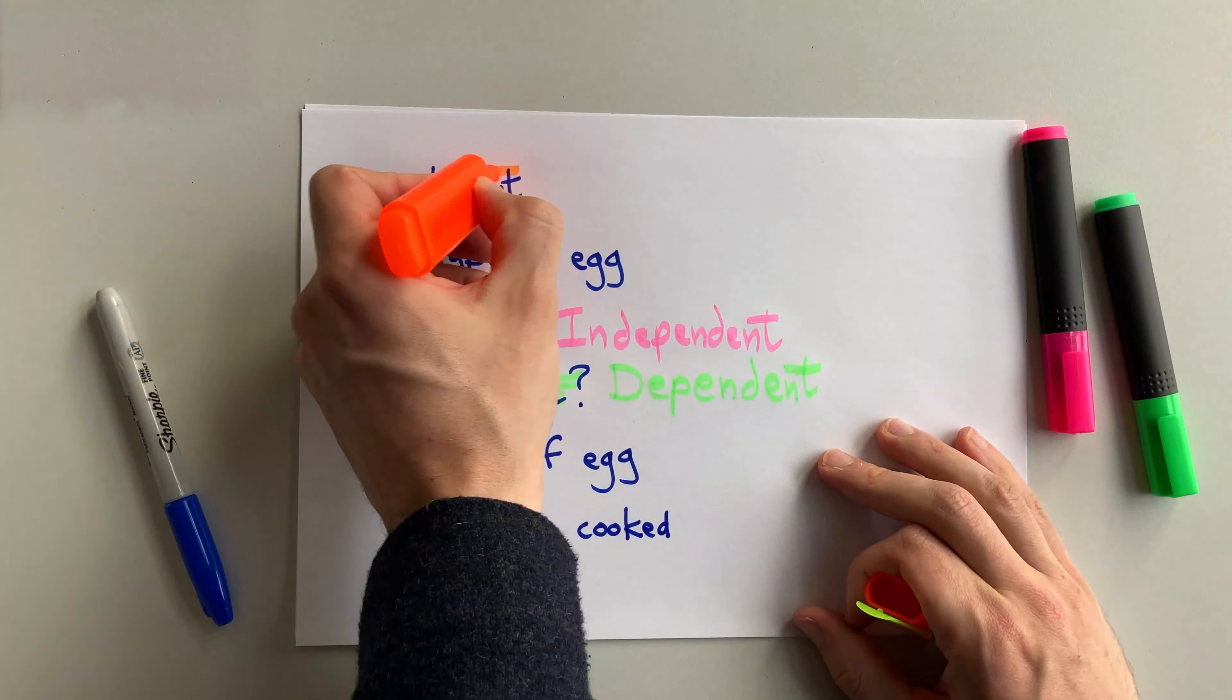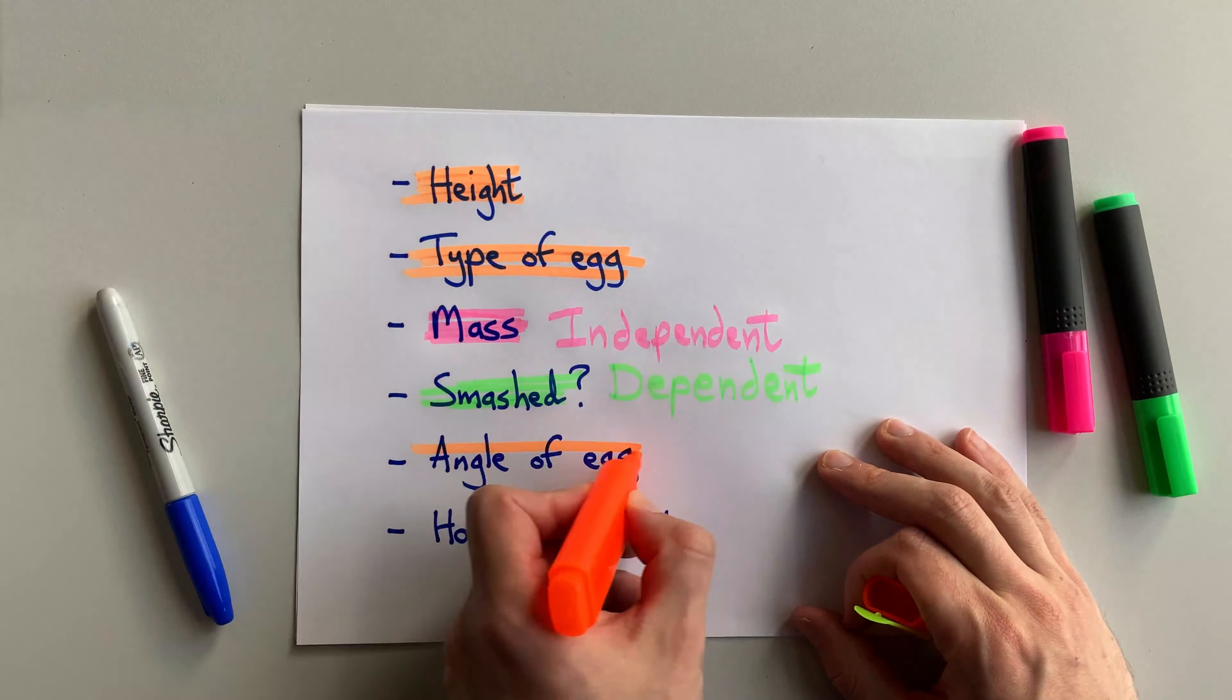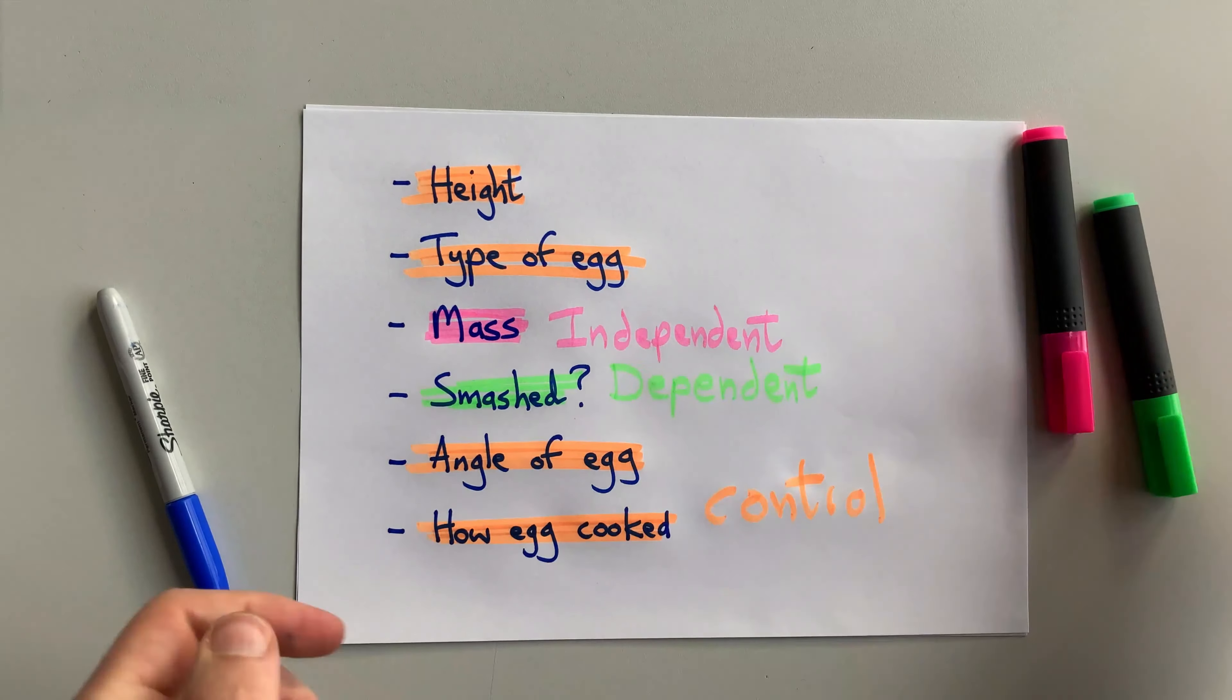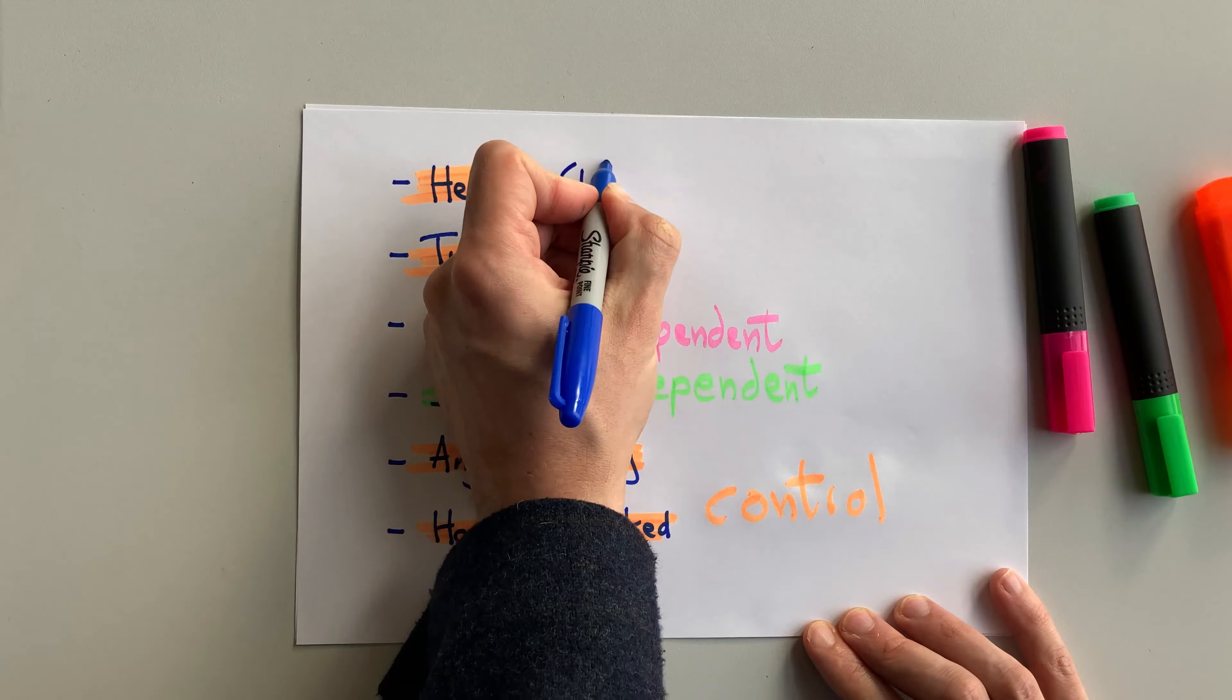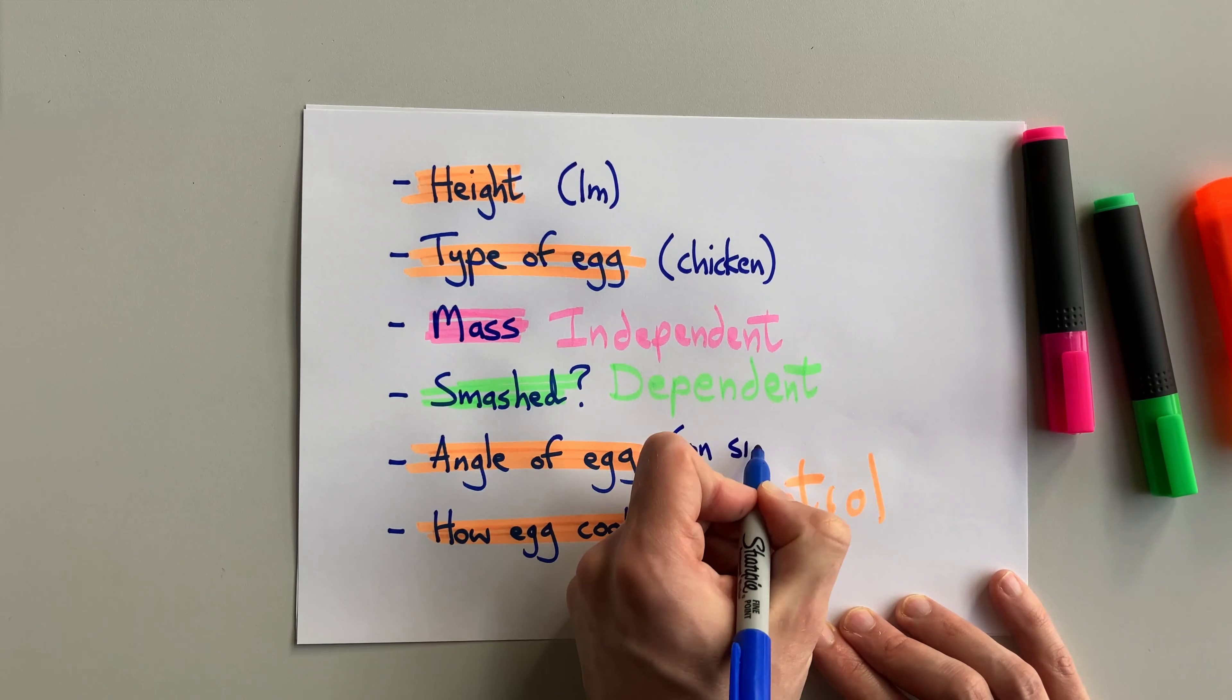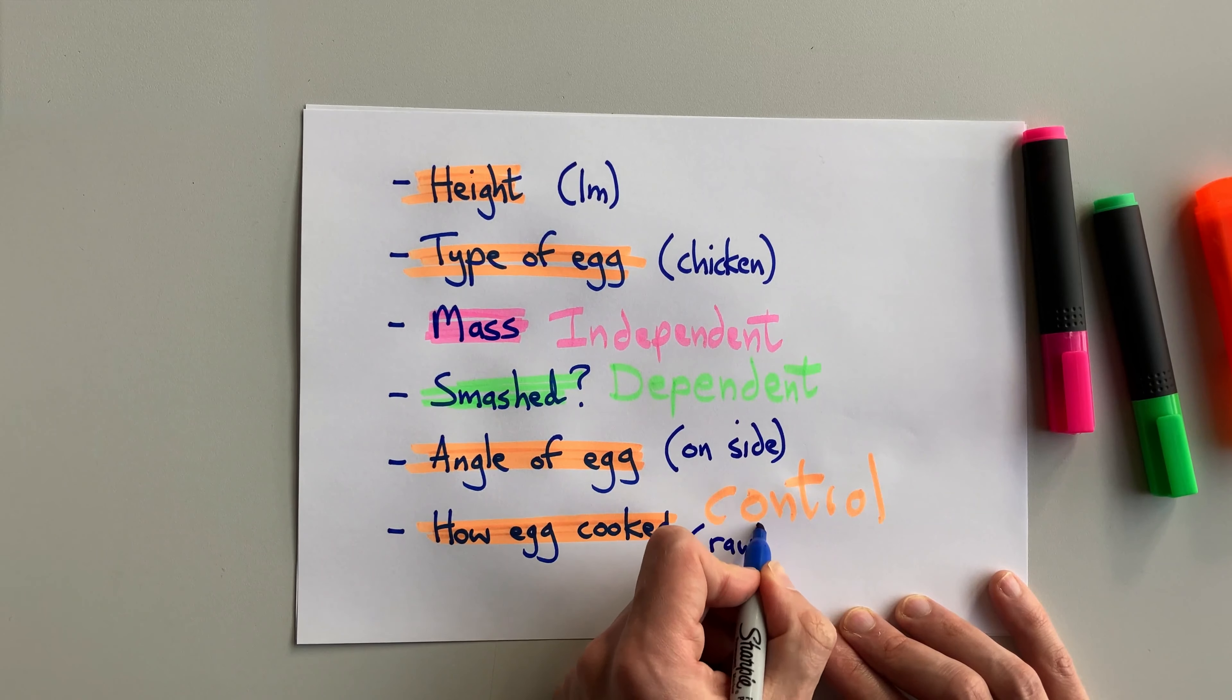Everything else that I have to keep the same, those are called control variables. And I have to control them and not let them change so they don't affect my experiment. With these control variables, we give them a value beforehand, the value we're going to keep them the same at, and we put it in brackets next to the variable.